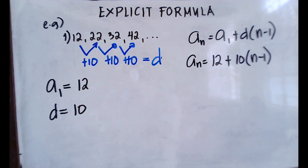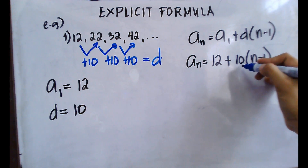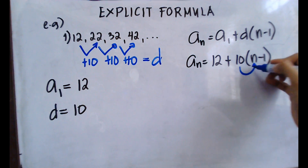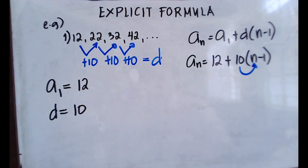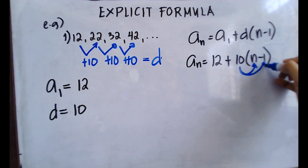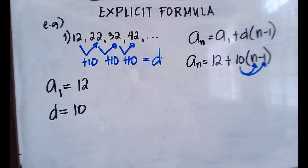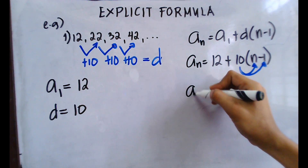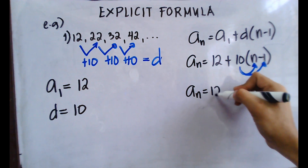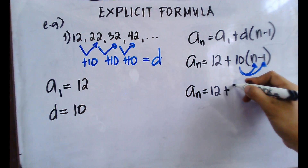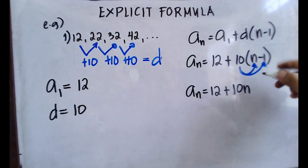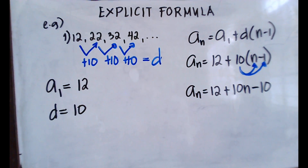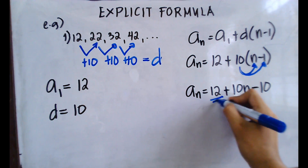Next, write the explicit formula in simplified form by distributing 10 to each term inside the parenthesis. So 10 times n gives 10n, and 10 times negative 1 gives negative 10. We now have: a sub n equals 12 plus 10n minus 10. Then we add the like terms 12 and negative 10.